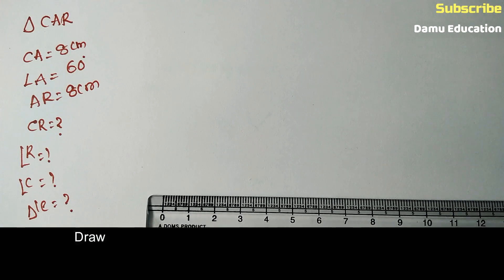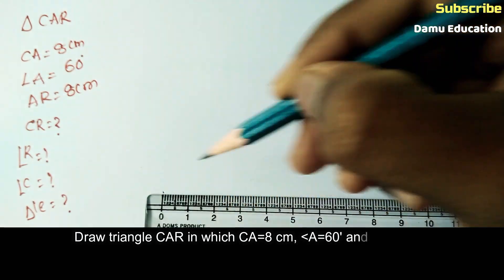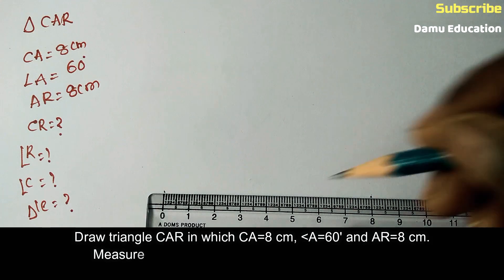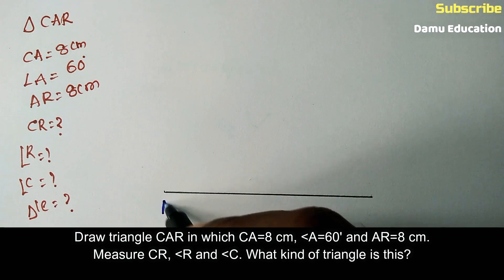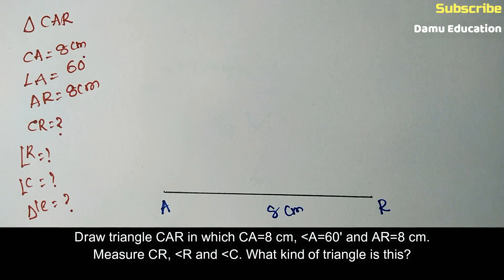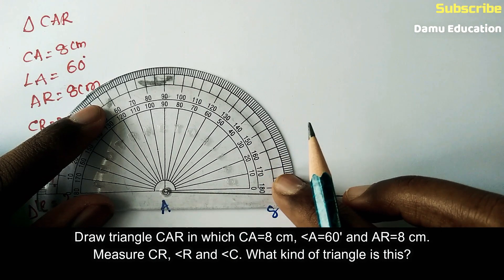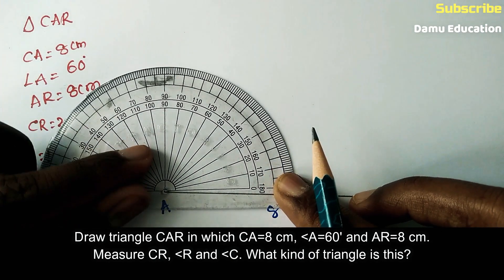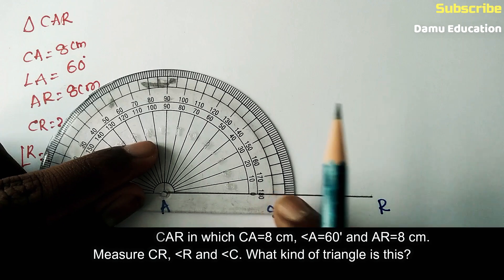First, keep your scale horizontally and join both the points. Let AR equal to 8 centimeters. Then we need to take the angle at A — keep your protractor with the center at A and measure the angle. AR line coincides with the right side, the protractor zero degrees.